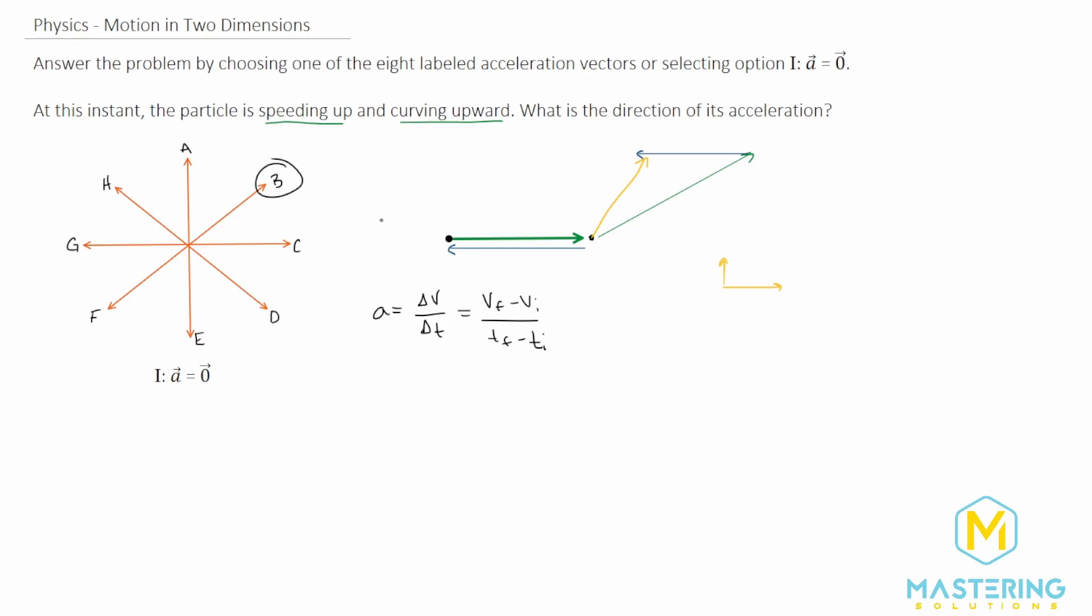Conceptually that makes sense because, like we talked about, it's going up and to the left, so there will be a little bit of both in it. The graphical method that we just did confirms that yes, that is the direction that it's going for the acceleration, b.